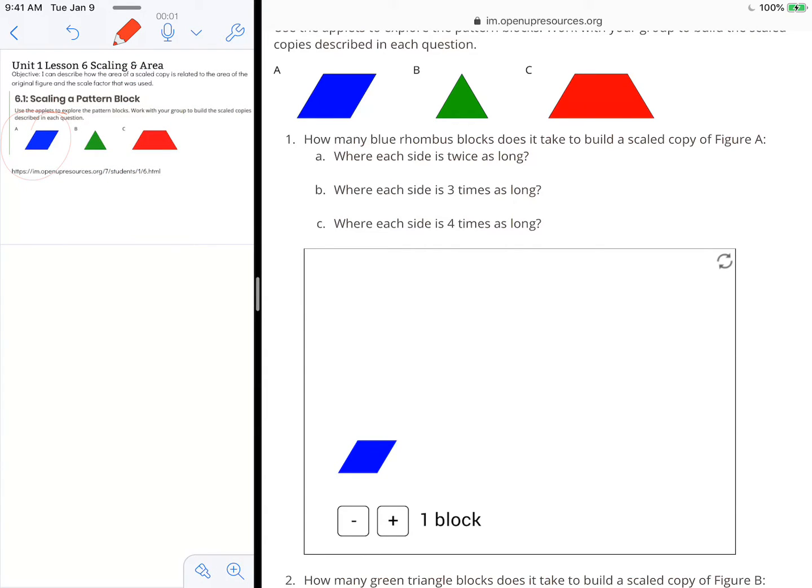We're going to be creating scaled copies of this blue rhombus. Question number one says, how many blue rhombus blocks does it take to build a scaled copy of figure A? We're trying to make it look exactly like the original blue rhombus, but for letter A, each side twice as long. So I'm going to add another block so it's twice as long. But if you look at the two shapes, I don't have the same shape overall. So I need to add some more blocks so that I can create that overall shape. I'm going to end up adding four blocks to make it twice as long because I had to make it twice as long and twice as tall so that it would still resemble that same blue rhombus. So that's two times two or two squared to get me four blocks.